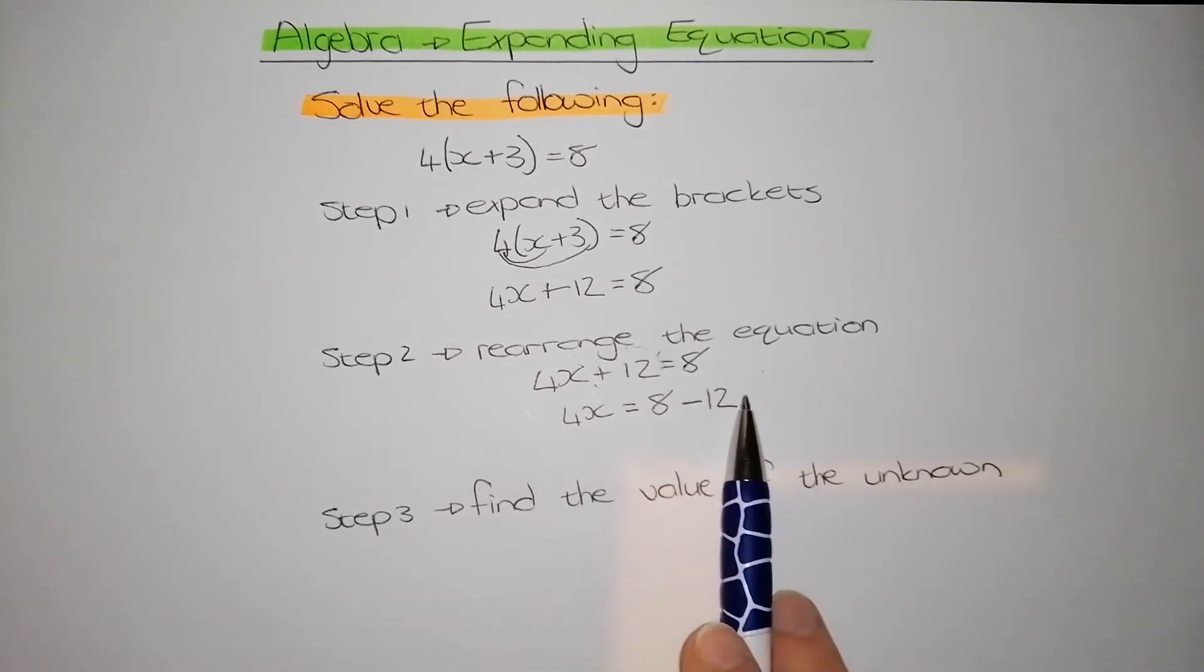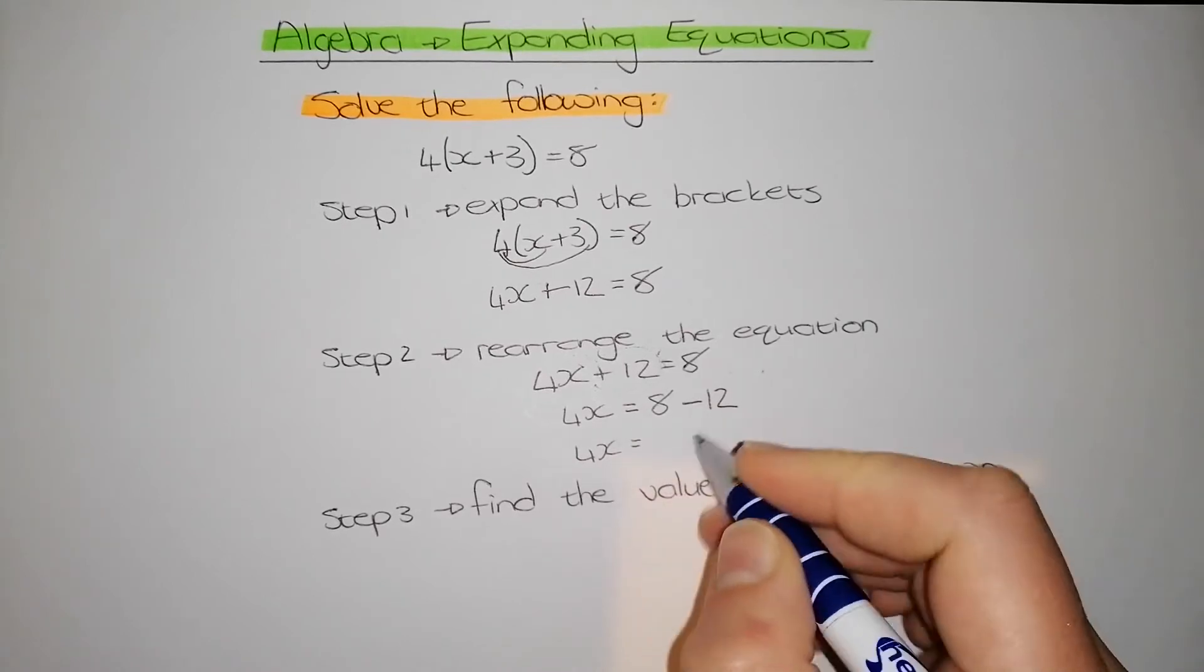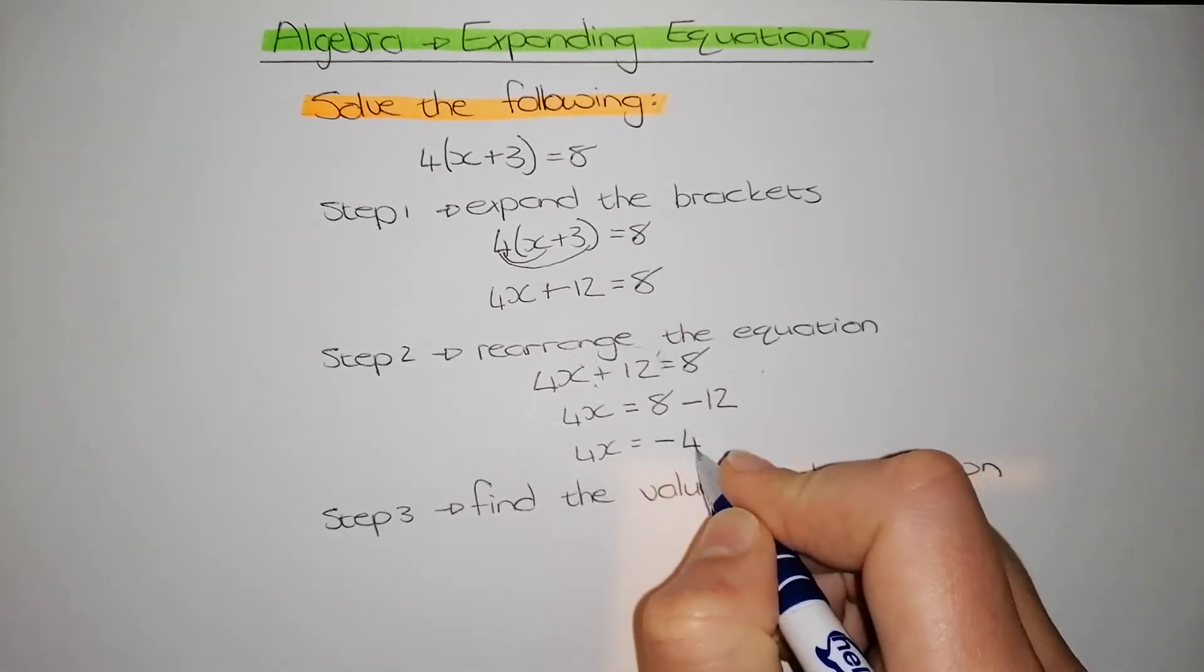Before I go to step 3, I can simplify what is happening on the right. So I'm going to have 4x. 8 minus 12 gives me negative 4.